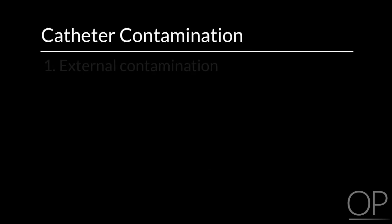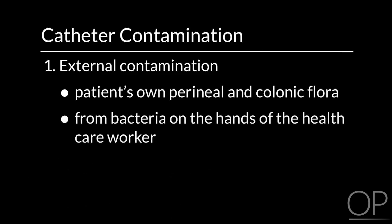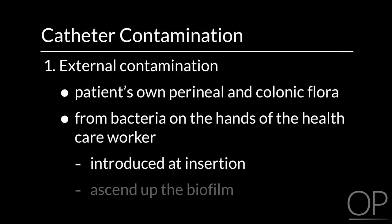Catheter contamination can occur in three ways. External contamination occurs due to a patient's own perineal and colonic flora or from bacteria on the hands of the health care worker. Bacteria can be introduced at insertion or ascend up the urethral tract in the biofilm along the outside of the catheter.